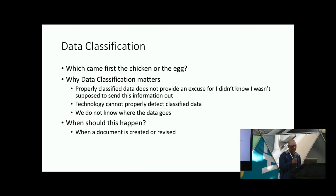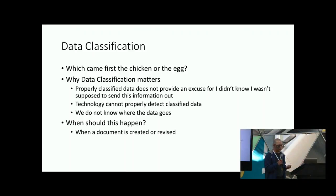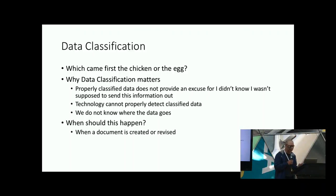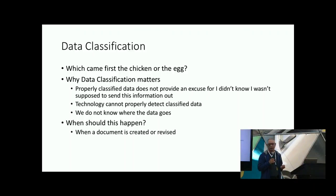Other technologies actually rely on data classification. UBA — user behavioral analysis — as well as data loss prevention, they suck. You cannot get any DLP or UBA things to actually work without classification. It's not going to happen. Magical AI and machine learning — it just doesn't do it.